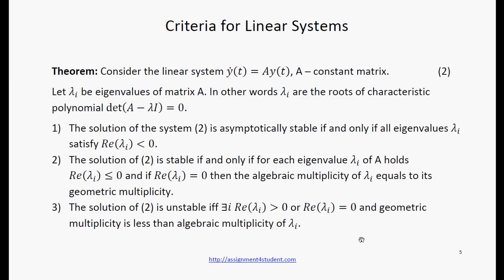Criteria for linear systems. Theorem. Consider the linear system 2 with the constant matrix A. Let lambda be eigenvalues of matrix A. So we have three results. First, the solution of the system 2 is asymptotically stable if and only if all eigenvalues have negative real parts.